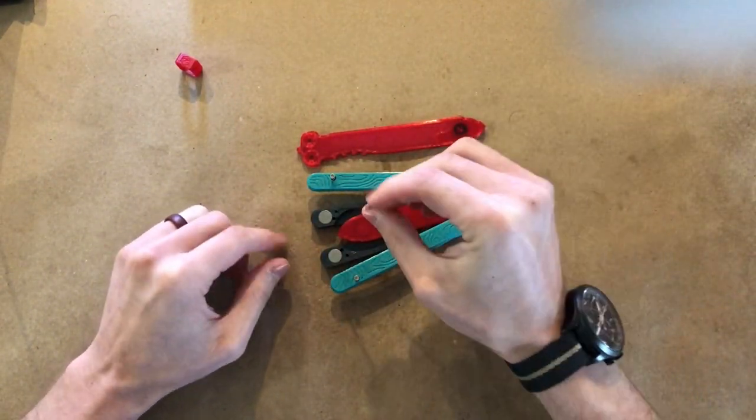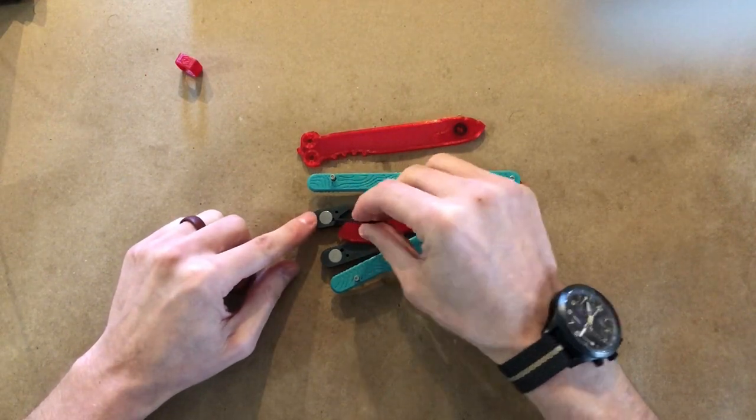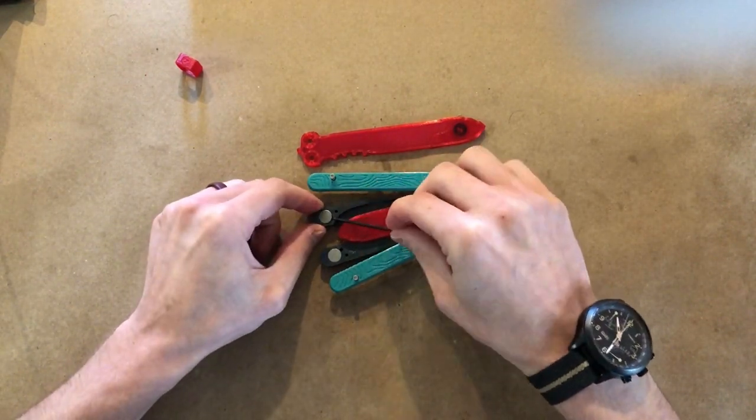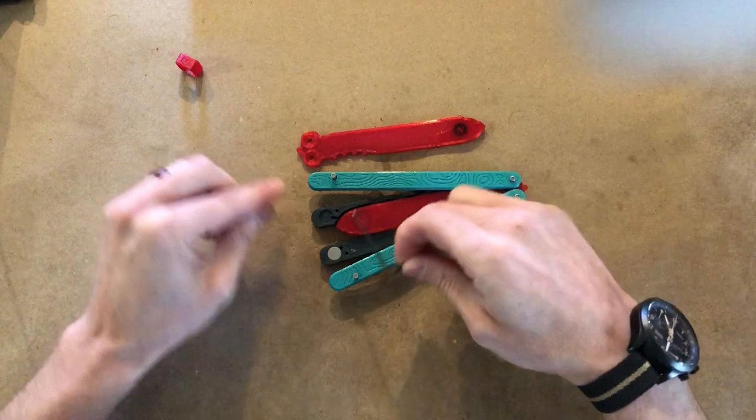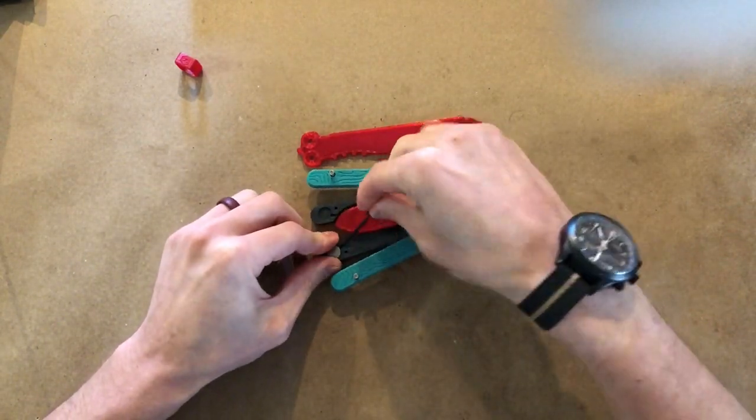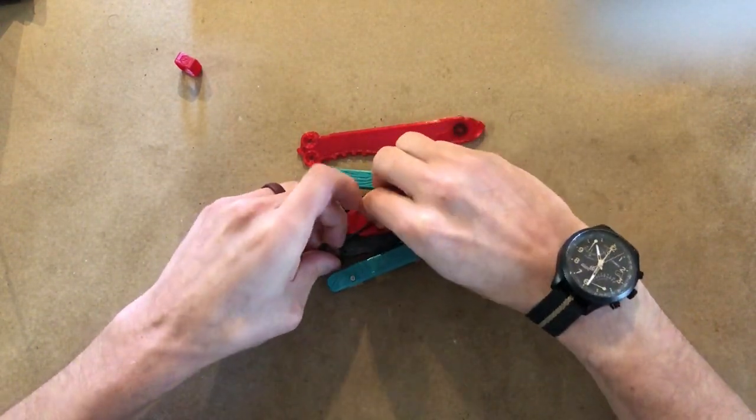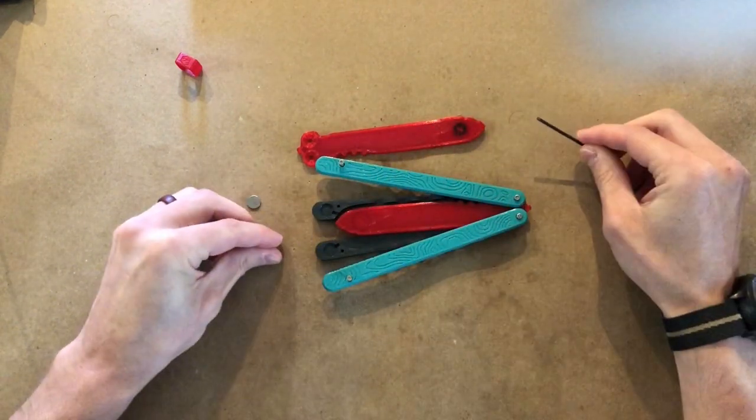Now what I'm going to do is stick the hex key in this little socket and just lever the weights up. You can do that to both weights, and then this will change the balance from a slight handle bias to a slight blade bias.